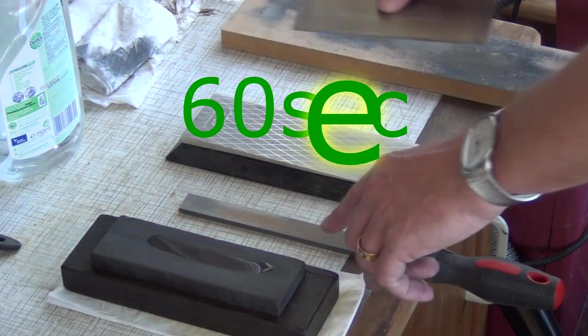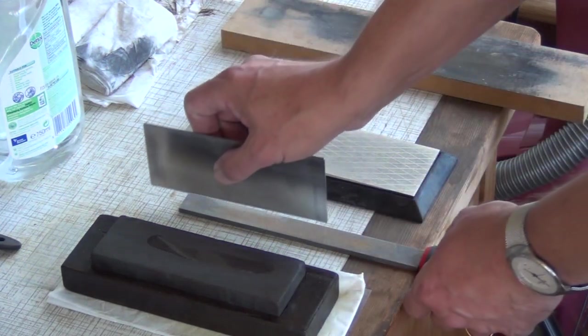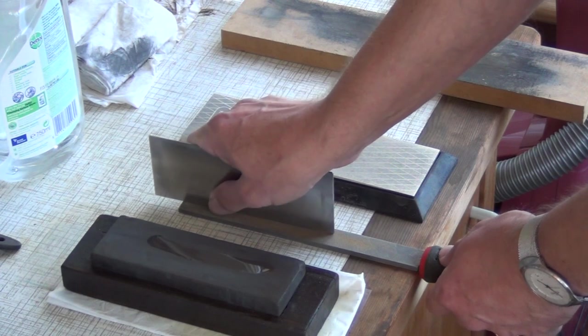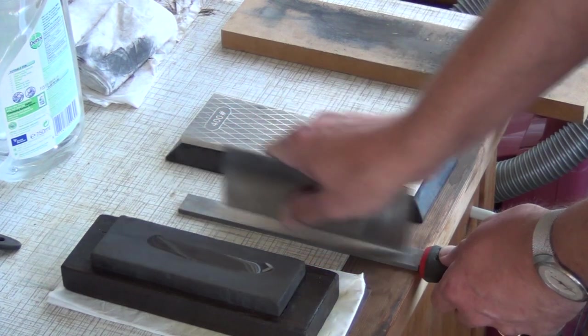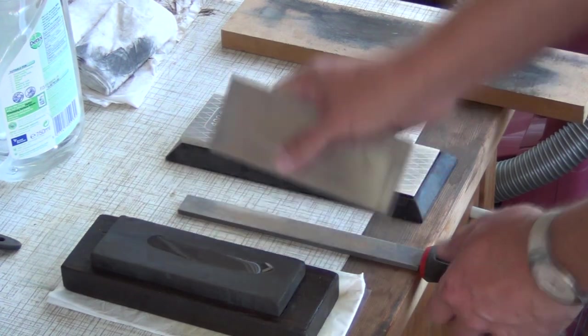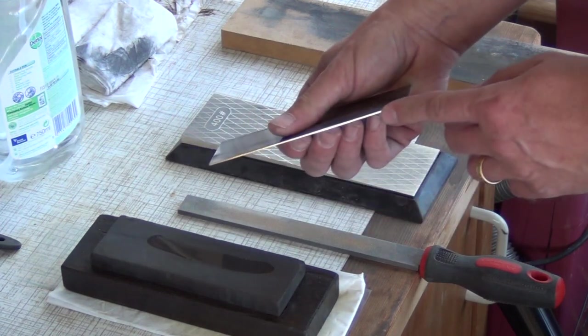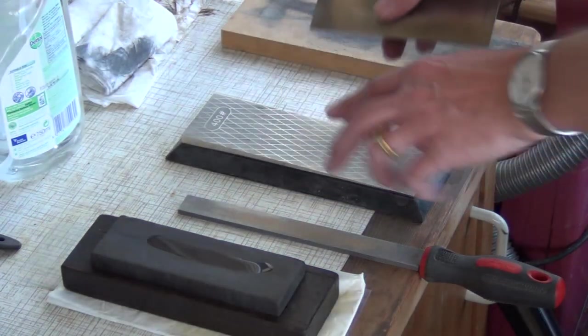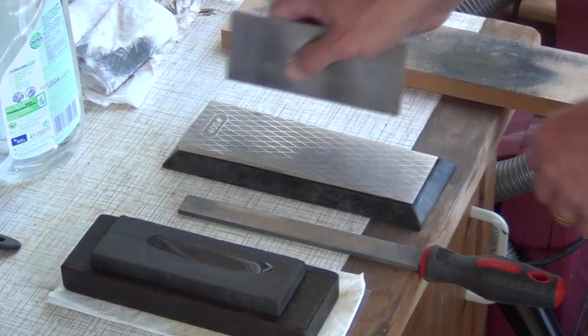If the edge is really damaged, use a mill file and drag the card along it, holding it at 90 degrees until you've got an even pattern all the way along the edge. For most cards, you can start with a 400 grit diamond plate.